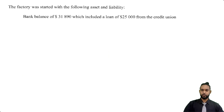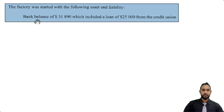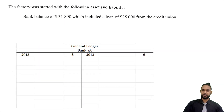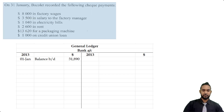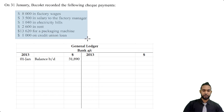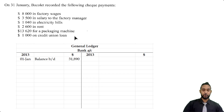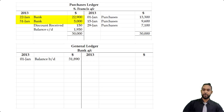We have one more account to do: the bank account. The question tells us the factory started with a bank balance of $31,890, which included a loan of $25,000 from the credit union. The remaining portion likely came from Barclay's capital. We populate the bank account with that opening balance of $31,890 on the debit side — bank is an asset, and assets have debit balances. We also need to include the two payments to S. Francis: $22,900 on the 22nd and $5,000 on the 31st, and the receipt from V. Taylor of $23,000 on the 30th.